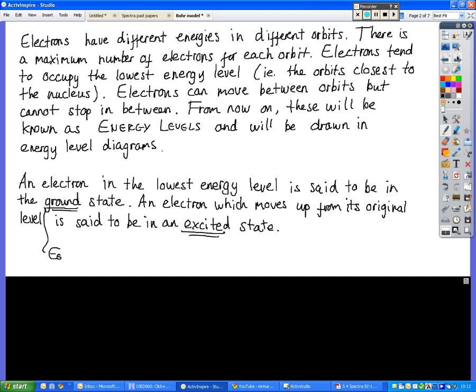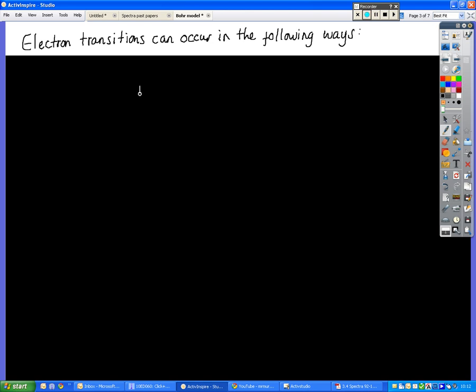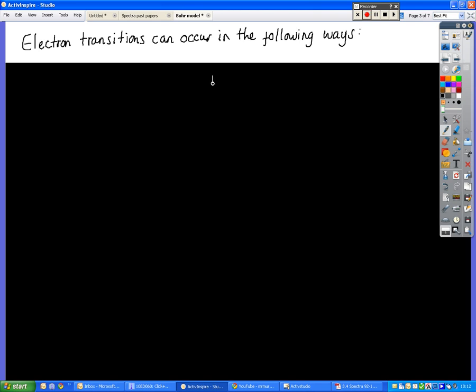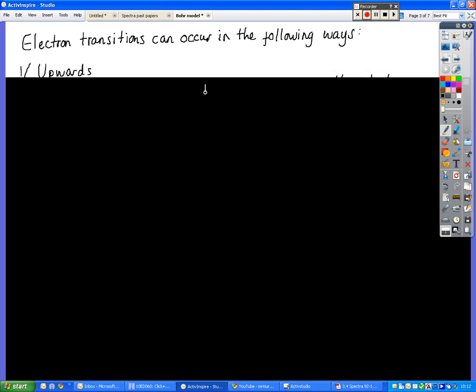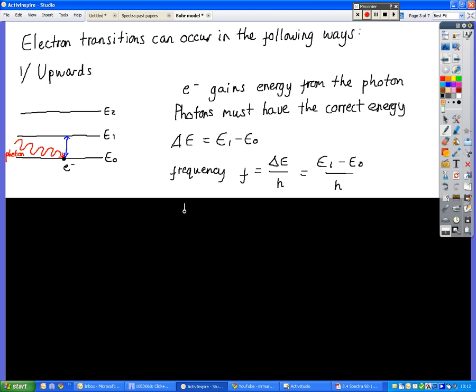But what will happen is that it will ultimately return back down to its original level. So we've really got two different transitions that can happen: upwards and downwards. There are different physical processes involved in both of those, but the energy that is gained or lost is always going to be the same, because that's dictated by the energy levels or the energy amounts required to move between these levels.